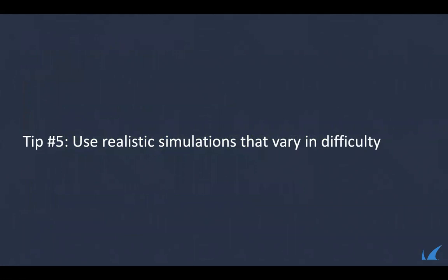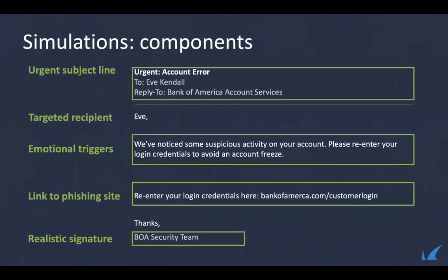Tip five: use realistic simulations that vary in difficulty. We first need to understand where difficulty comes from — the core components of an email: the subject line, recipient, emotional triggers like urgency or limited-time offers, the link to the phishing site, and a realistic signature. The complexity built into the email also includes manipulation of the greeting, content, grammar, and the use of a publicly recognized brand or logo. All of these put together drive complexity.